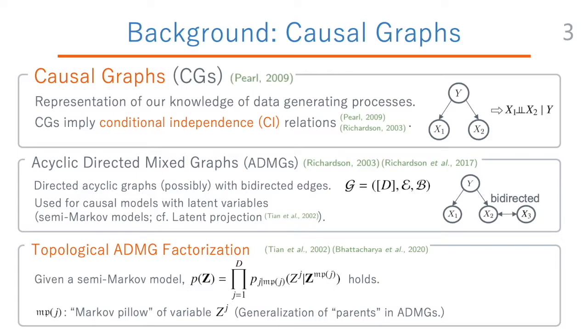More specifically, in this work we consider acyclic directed mixed graphs, or ADMGs for short. ADMGs are graphs with directed edges and bidirected edges, and they are assumed to have no directed cycles. They are used to describe the causal graphical models with latent variables. As described at the bottom of this slide, if a causal graph that is an ADMG is given, it implies a certain factorization structure of the data distribution, which is known as the topological ADMG factorization.